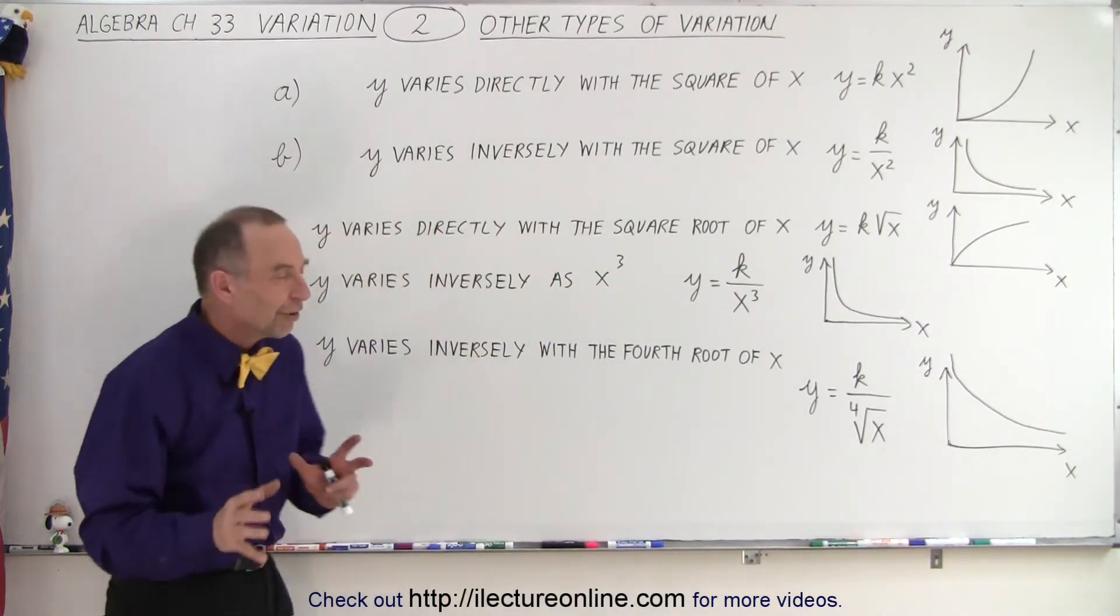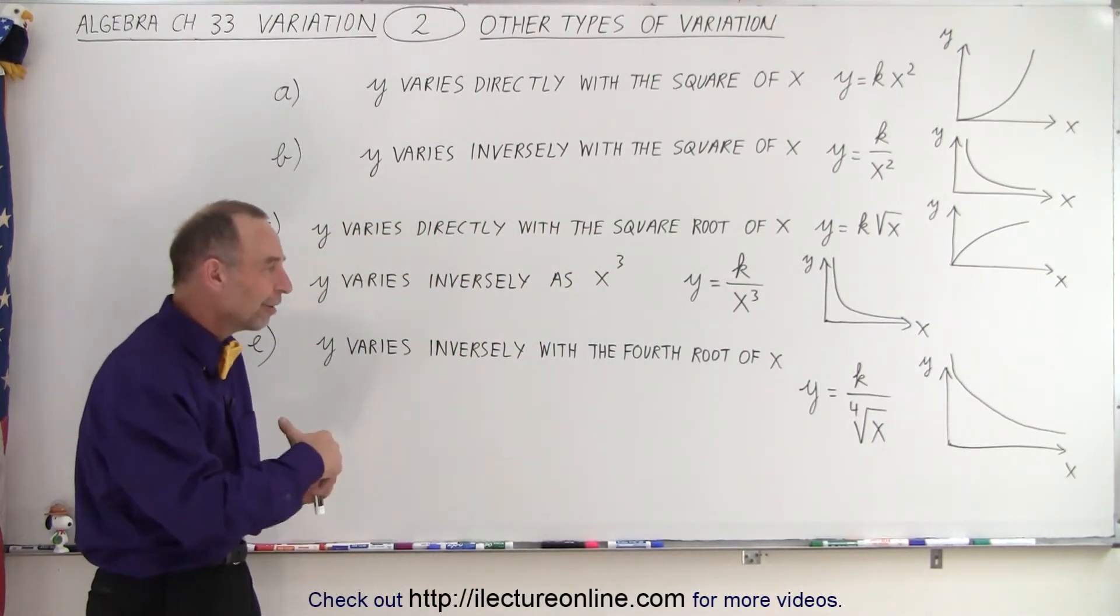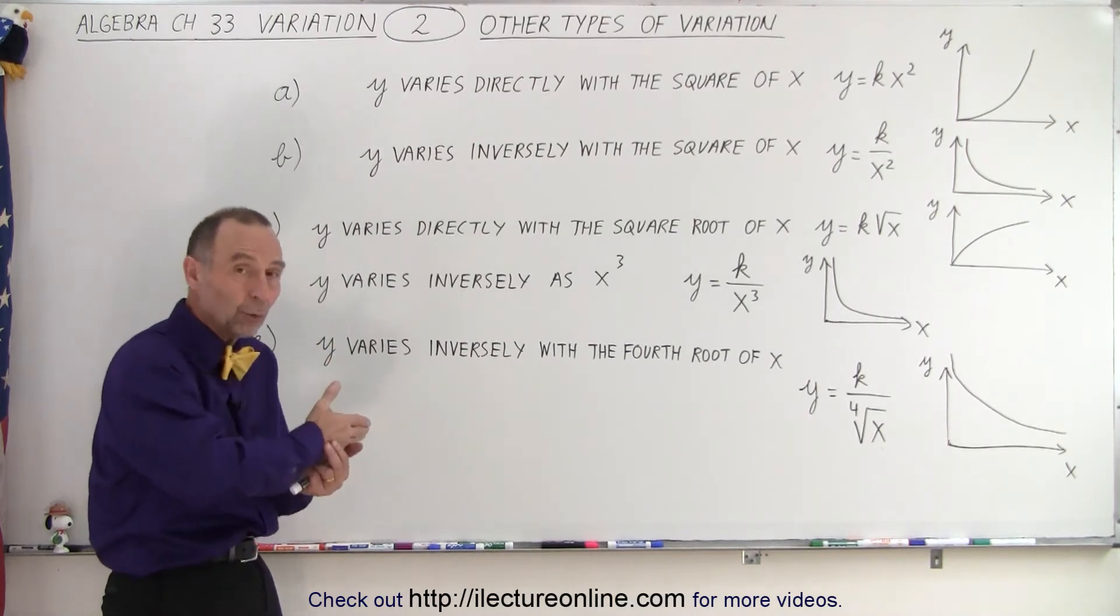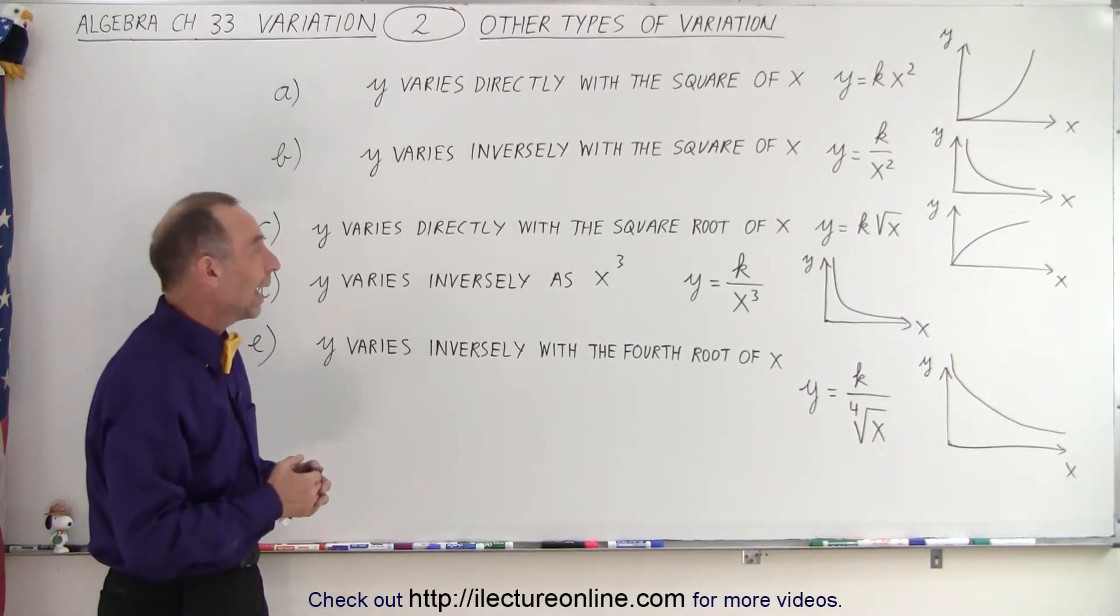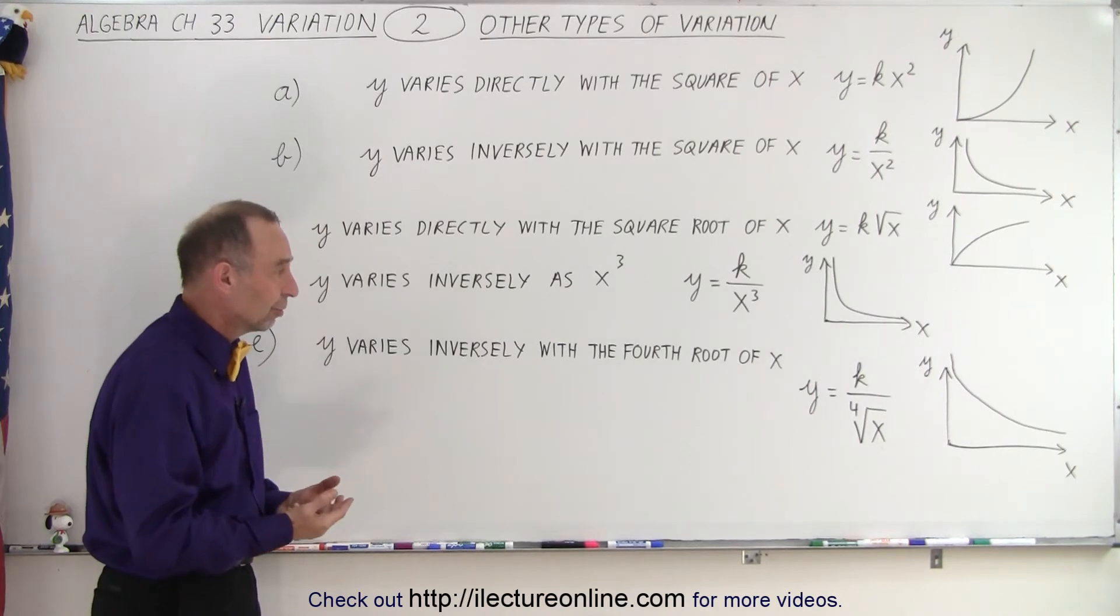So you can see there's different kinds of variation. When X varies, Y will vary. But it's either direct or inverse variation. And of course, you can have X, X cubed, X to the fourth.